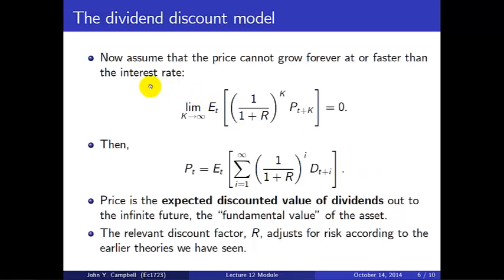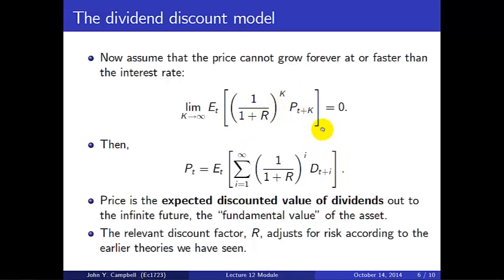The final step is to assume that the price of the asset cannot grow forever at a rate equal to or faster than the interest rate. In other words, if we look further and further into the future at expected future prices and discount them, that discounted value goes to zero as we look further ahead — the price is not growing fast enough to overcome the discounting. If that's the case, we can extend the k-period sum to the infinite future, and we have the statement that the price is the expected discounted value of all future dividends. This is sometimes called the fundamental value of an asset.